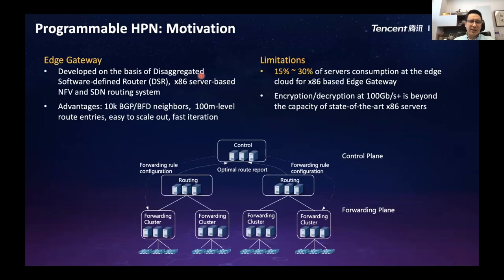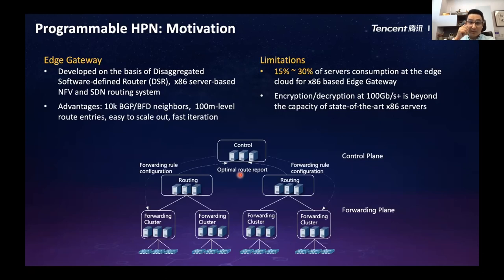This edge gateway is deployed based on our software-defined router — a server-based NFV and SDN routing system. In this architecture, we have the control plane, routing plane, and forwarding plane. In the forwarding plane, we use VPP and DPDK from open source to establish our forwarding plane on servers. For the control plane, a couple of years ago we used ODL (OpenDaylight). Now we use a microservices-based control plane — a fully software-based SDN architecture.